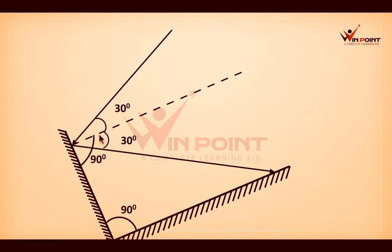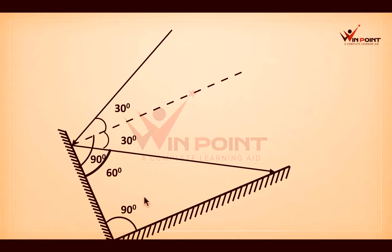Here it is 30 degrees and the total angle is 90 degrees. So this angle will be 60 degrees, since 30 plus 60 equals 90. This angle is 30 degrees and this angle will be 60 degrees. It is a triangle — the sum of the three angles of a triangle is 180 degrees. 90 plus 60 equals 150, and the remaining angle will be 30 degrees.